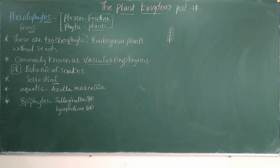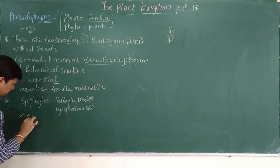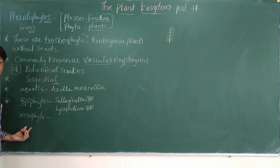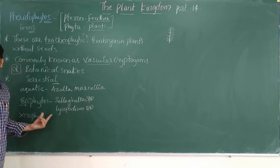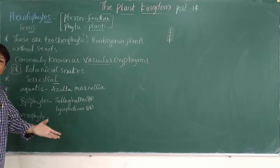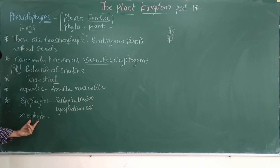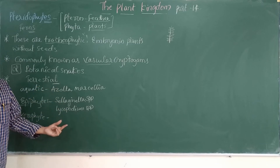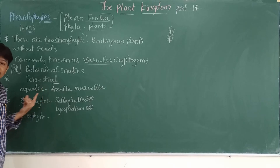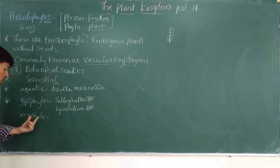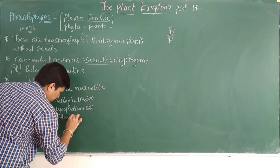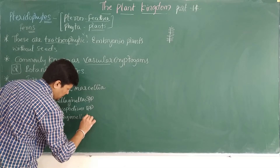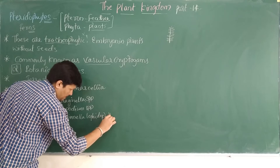There are also certain plants like Selaginella lepidophylla which act as xerophytes — the type of plant that grows in conditions of water scarcity, like desert conditions. Selaginella lepidophylla is one such species that grows as a xerophyte where there is a scarcity of water.